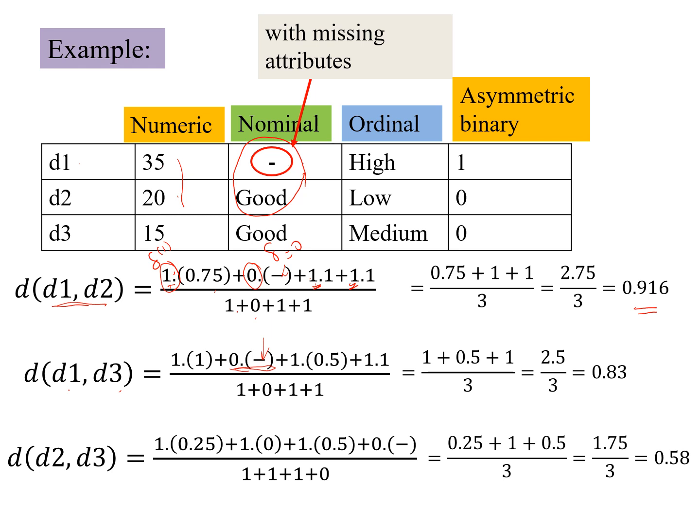And see, for the asymmetric binary, here we get a delta 1, because these are not both 0. So the distance is 1 here, again here also, for the asymmetric binary, delta is 1, and the distance is also 1. So we get the total distance computation as 0.83.